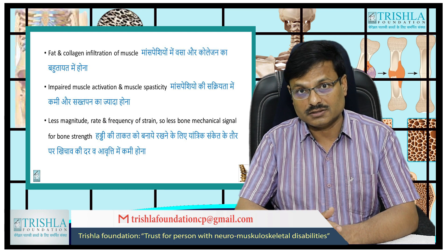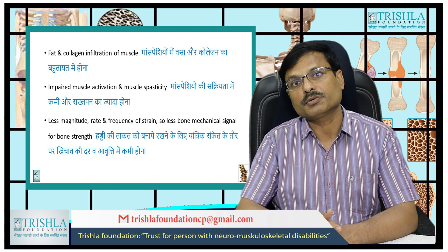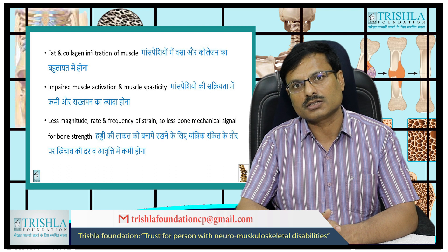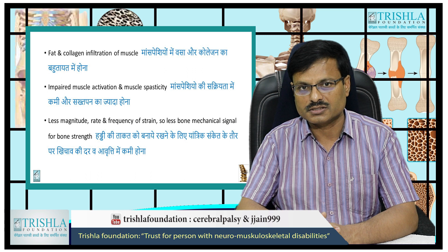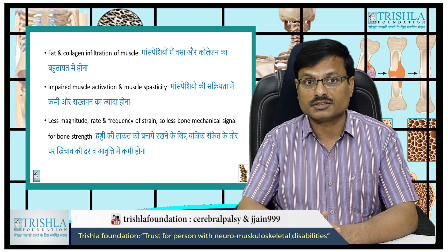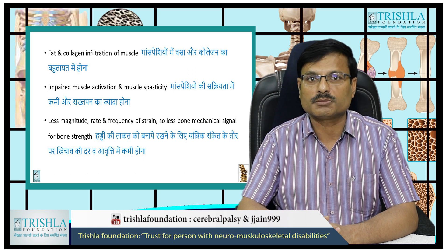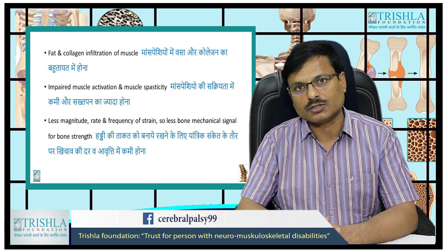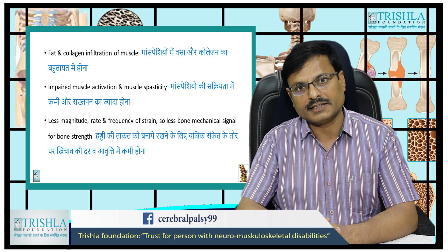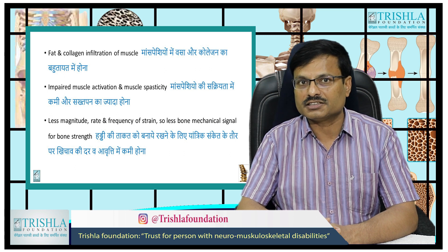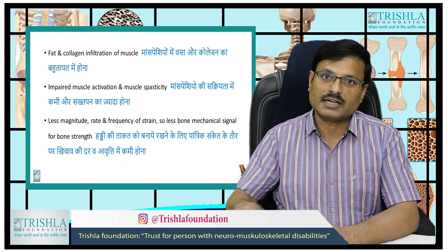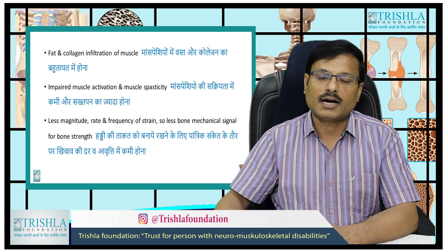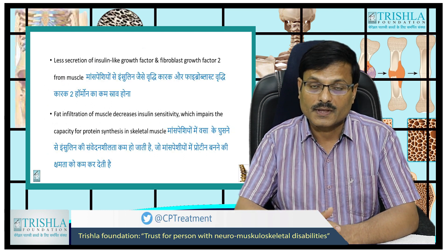What are the different factors responsible? There is fat and collagen infiltration of the muscle — the muscles are not mostly muscle tissue but are infiltrated by fat and collagen. Cerebral palsy also causes impaired muscle activation and muscle responsiveness, leading to less muscle action, less magnitude, and less rate of strain. So there will be less strain on the bone by the muscle, leading to poorer bone quality compared to normal children.